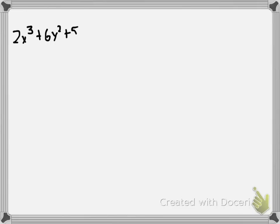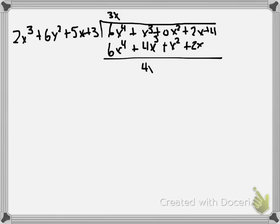So we set up 2x^3 + 6x^2 + 5x + 3, and we divide that into 6x^4 + x^3 + 2x + 4. Not too hard to see that we need to start off with a 3x here. That gives us 6x^4 + 4x^3 + x^2 + 2x. Subtract, adjust coefficients mod 7, we're left with 4x^3 + 6x^2 + 4.